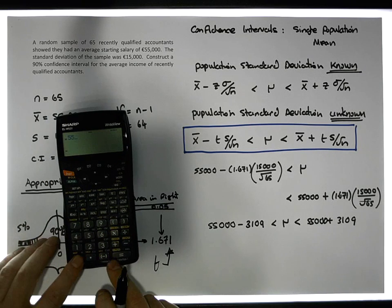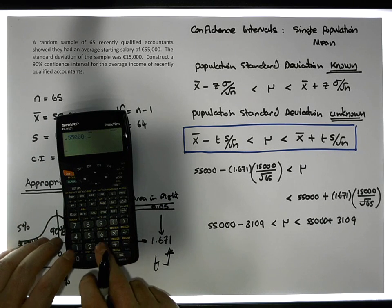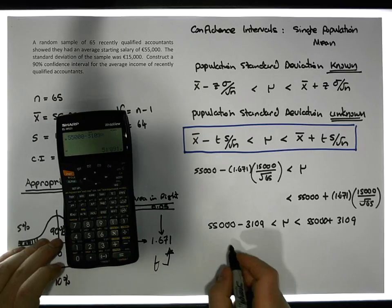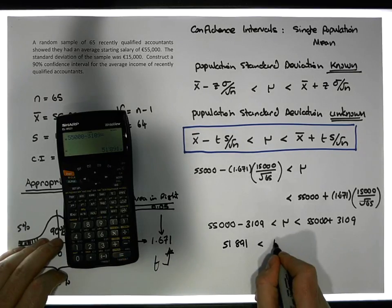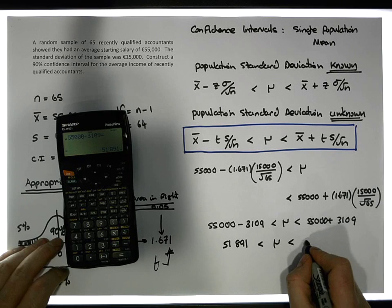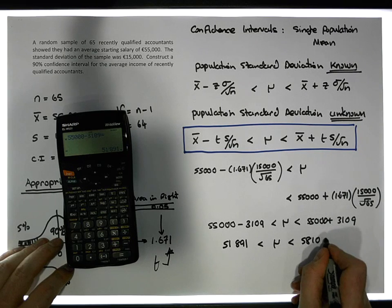When we subtract, 55,000 minus 3,109 gives us 51,891, which must be less than mu, which must be less than 58,109. And this is the interval.